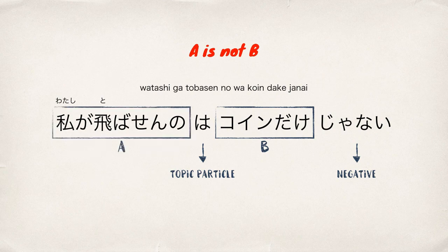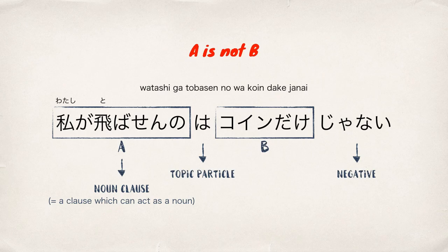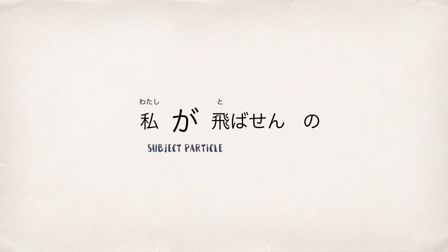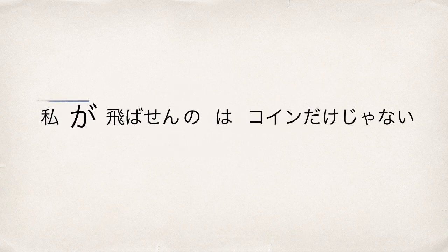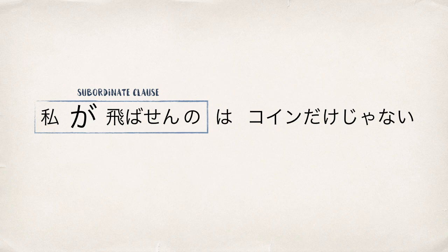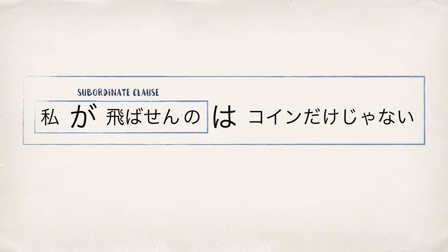First, let's look at A: 私が飛ばせんの, which is a noun clause. 私 means 'I,' and が is the subject particle. You might want to use は here, but basically you have to use が to mark a subject in a subordinate clause, whereas は is used to mark a topic in a main clause.